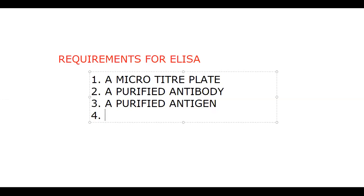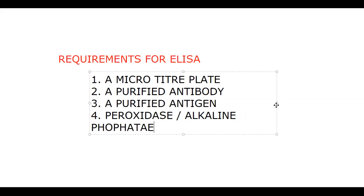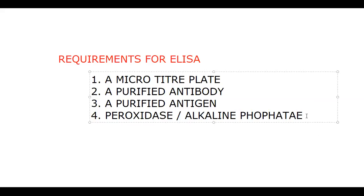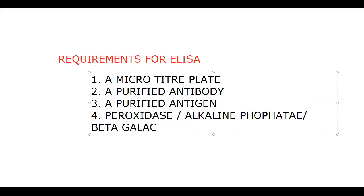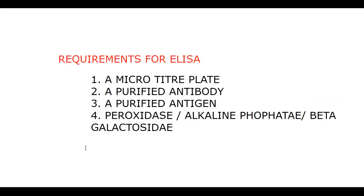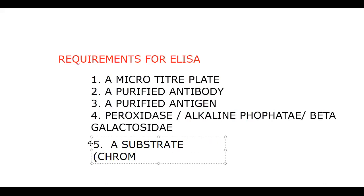The enzymes we may use are peroxidase, alkaline phosphatase, or beta-galactosidase. These are the enzymes used. When using a particular enzyme, we need to use the proper substrate which that enzyme works on — a substrate required, a chromogenic substance which reacts with the enzyme and changes its color.